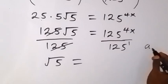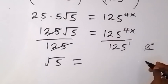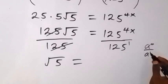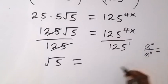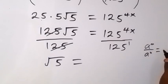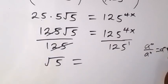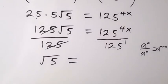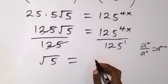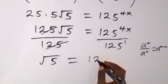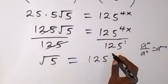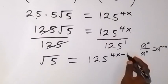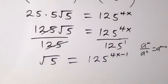Since we are dividing, we follow the rule of indices: when we have a raised to power m divided by a raised to power n, we can write this as a raised to power m minus n — we subtract the powers. From here, we can write it as 125 raised to power 4x minus 1.